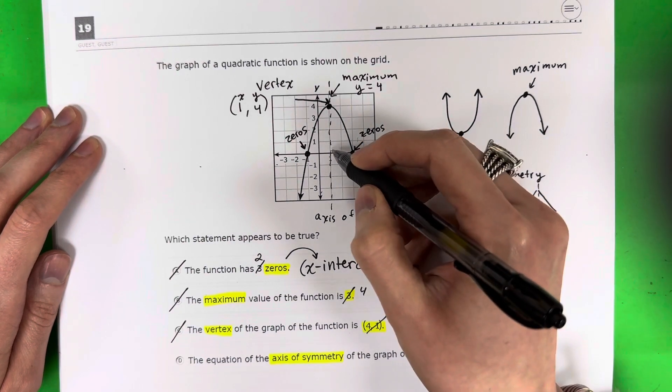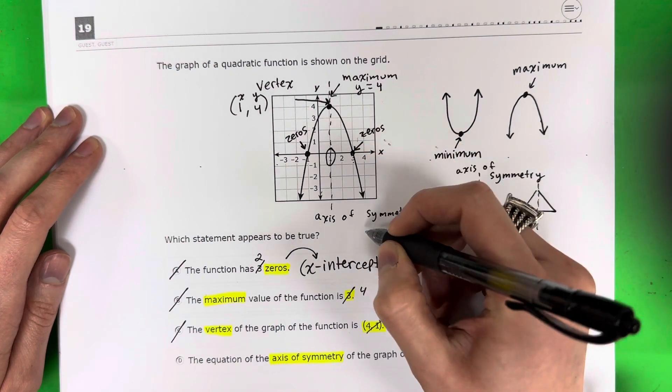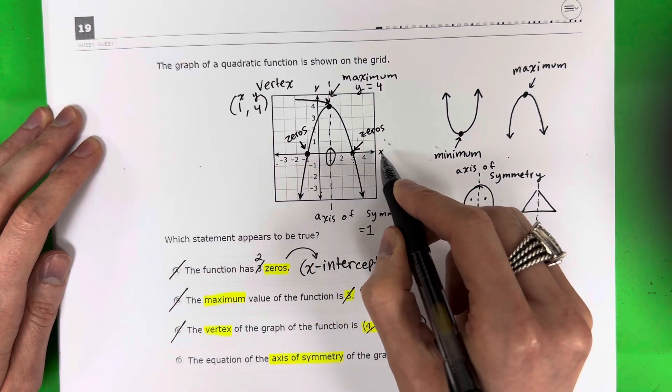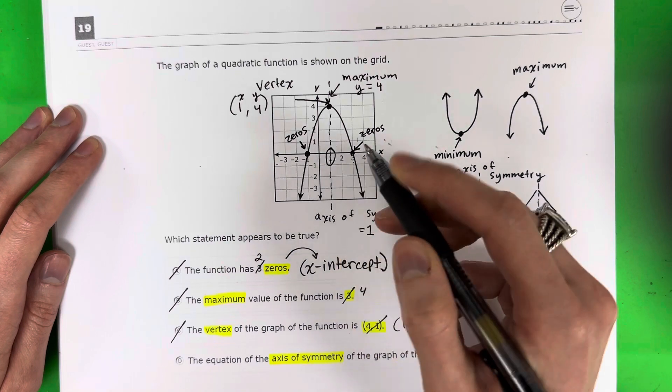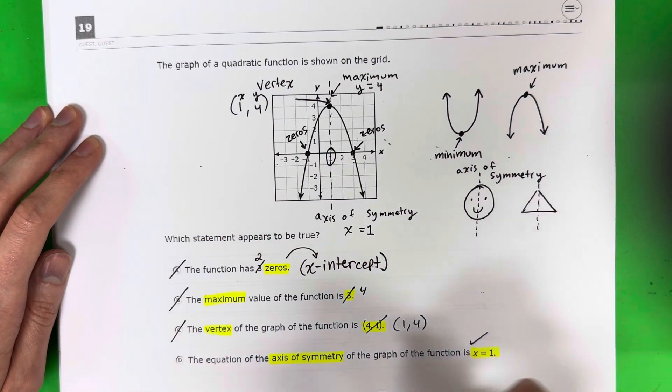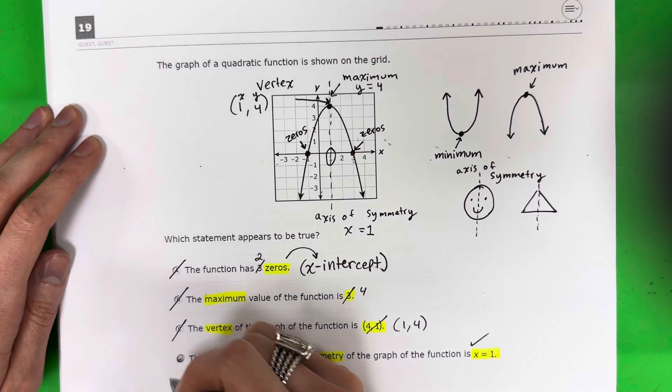It's touching right over here at 1. And this 1 is on which line? It's on the x. This is x = 1, which is exactly what we have here. So that is correct. So my answer here would be D.